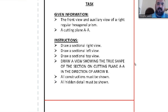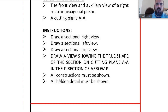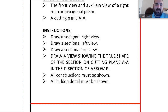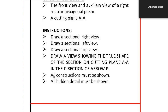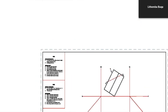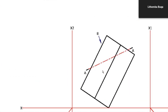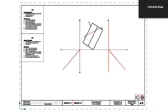It also reads below that 'all constructions must be shown.' This is a bit of an oddity because normally when we draw sectional views, all the views are cut and we don't add hidden detail. But because they specifically tell you to add it, you must do so. If they don't specifically say to add constructions, you won't add any hidden detail to a sectional view - you might still add it to a front view but not to a sectional top view.